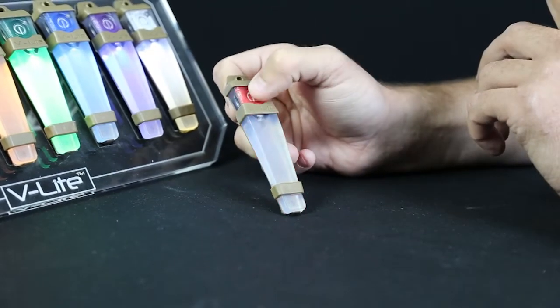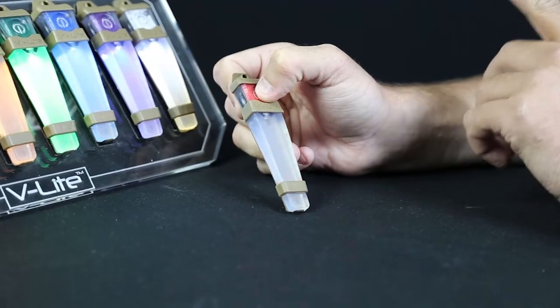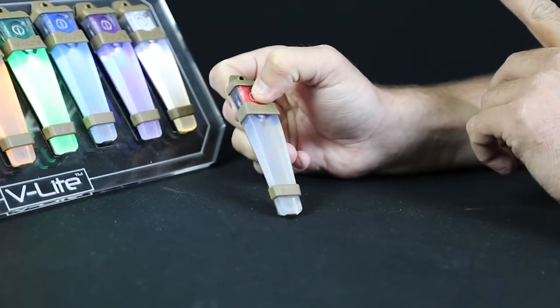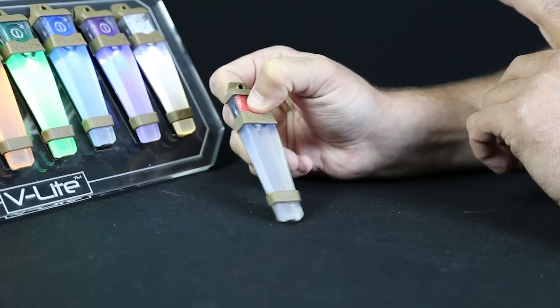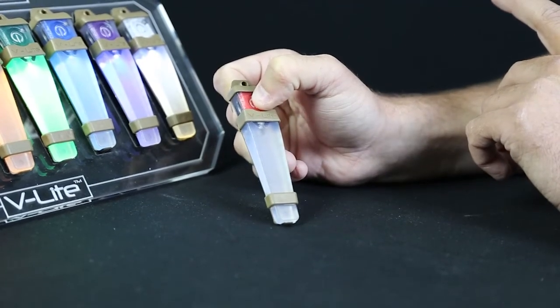After that, we're going to use the power button to cycle through the modes that we want. I'm going to hit it once. That's program mode one. Hit it again. Program mode two.